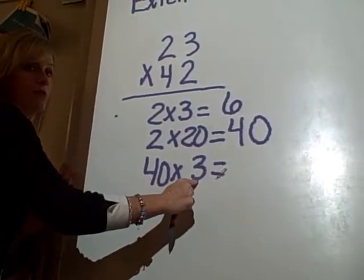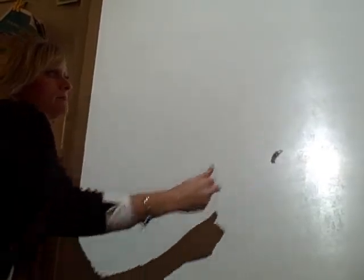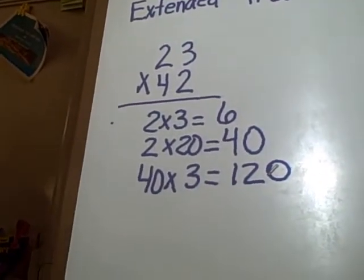What is 4 times 3? 12. 12, and how many 0s? 1. 1. Okay, now I'm almost finished. I have one more step.